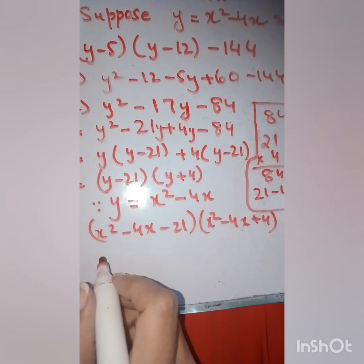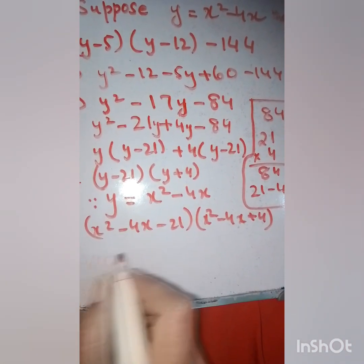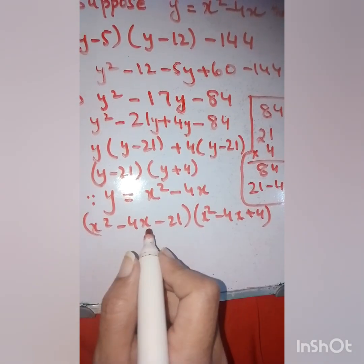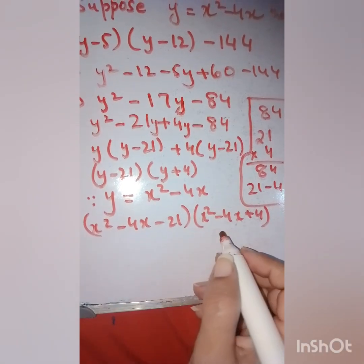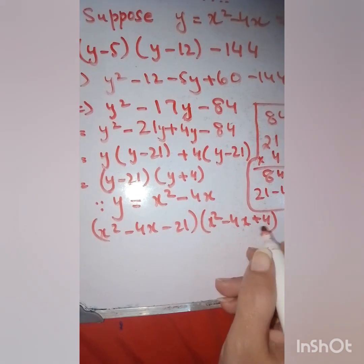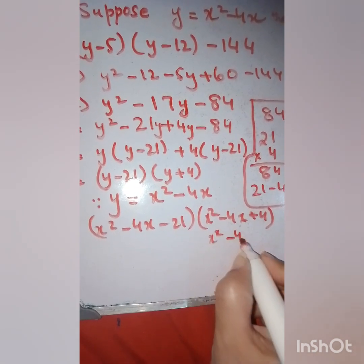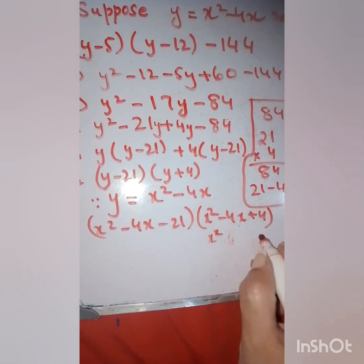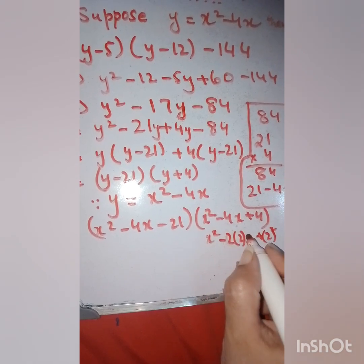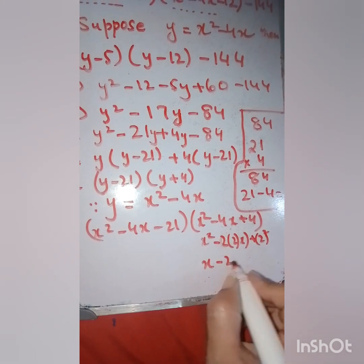Now I will apply the middle term to each factor. For x² minus 4x plus 4, I can write this as x² minus 2·2·x plus 2², which fits the formula a² minus 2ab plus b², giving (x minus 2)².